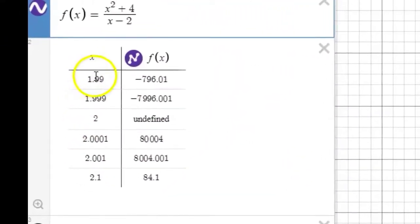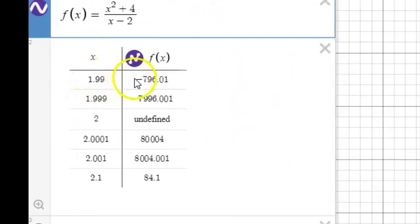When x is 1.99, the output value is negative almost 800. And when x is 1.999, the output value is almost negative 8,000. So our hunch is confirmed. The closer x gets to 2 from the left side of 2, the more negative, the larger and larger negative quantities are seen for the output values. Now let's go back and see what this means for us in terms of reporting this limit.